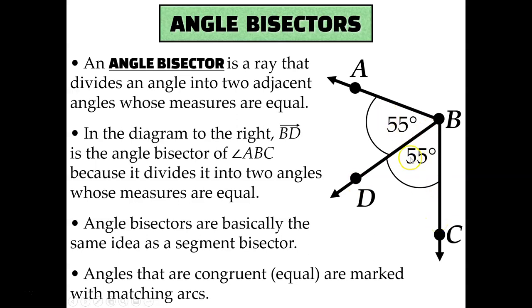Since these two angles have the same measure, that means that angle ABC was bisected, it was cut in half, and the thing that cut it in half was this ray, ray BD.